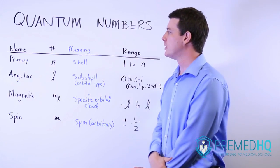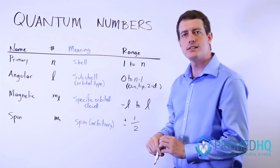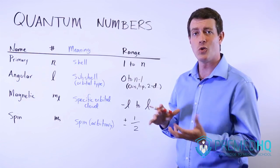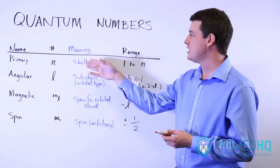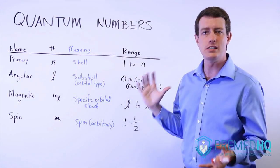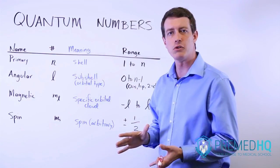The first quantum number is the primary quantum number, and that simply tells you which shell you're in. So if it's an electron that's in a 1s orbital, then that is going to be something with an n value of 1. If it's in the 3d orbital, then it will have an n value of 3.